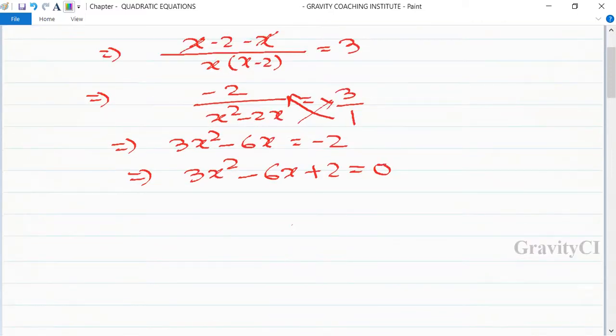Now we find the value of x by using the quadratic formula. Here a is equal to 3, b is equal to minus 6, and c is equal to 2. Therefore x is equal to minus b plus minus root under b squared minus 4ac upon 2a.